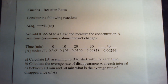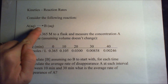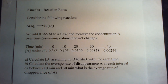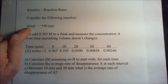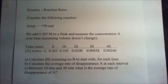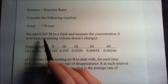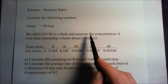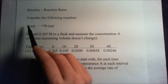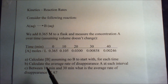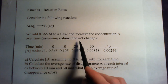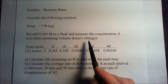What we have here is a kinetics problem, and we're going to calculate reaction rates, specifically average reaction rates. Consider the following reaction: we have A going to B — about as simple a reaction as you can get. For every molecule of A, you produce a molecule of B. We're going to add 0.365 moles to a flask and measure the concentration of A over time, assuming the volume doesn't change. That assumption makes our calculations a little bit easier.